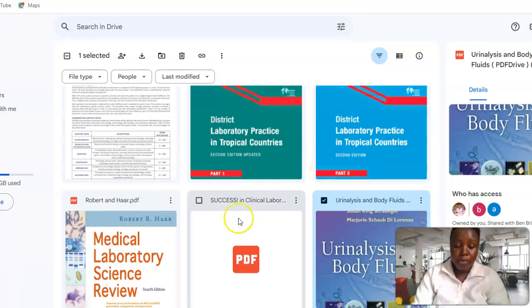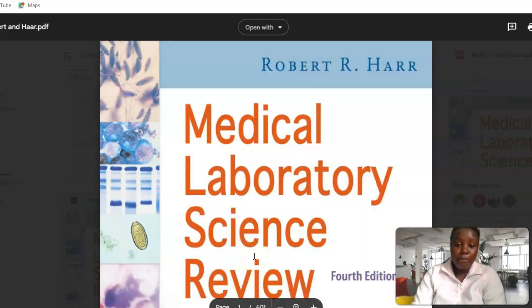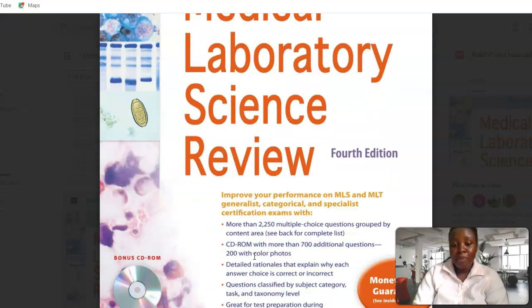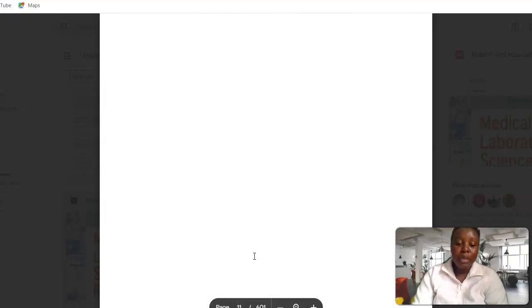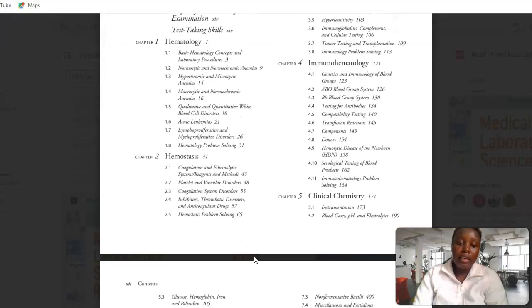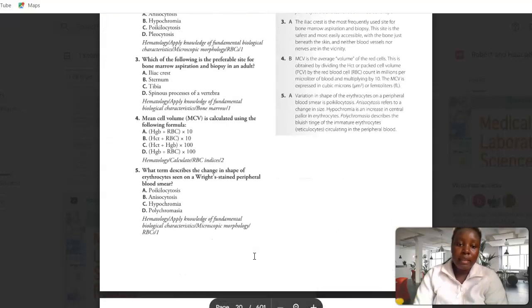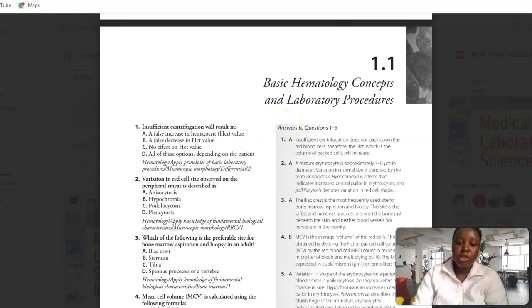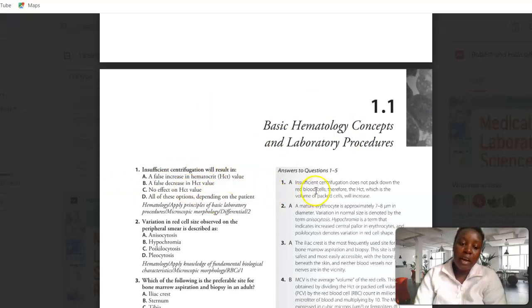Another good book that I found was Medical Laboratory Science Review by Robert Harr. This book is so good in that it has highlighted testing, how you test yourself. It has categorized topics, different topics. For example, basic hematology concepts and laboratory procedures. These are exam questions on this topic, and then it has gone ahead to give you an answer here, and not just an answer but an explanation why it's that answer that you've chosen.